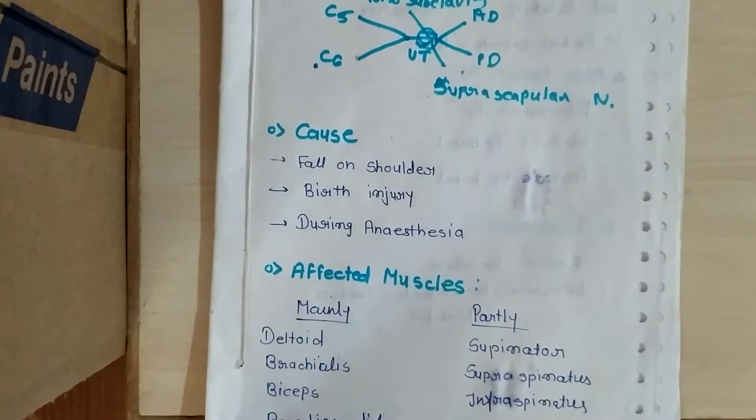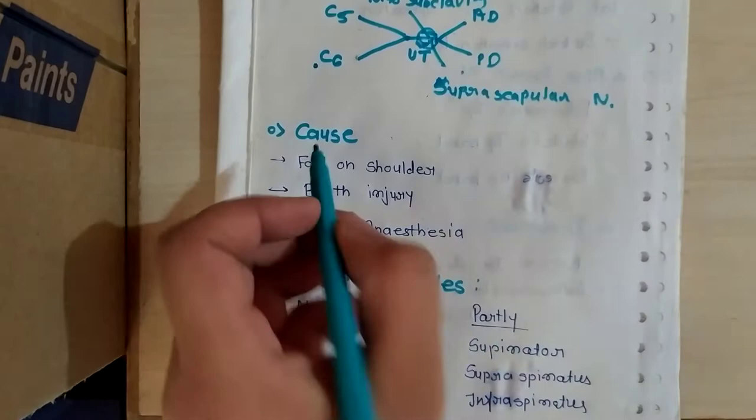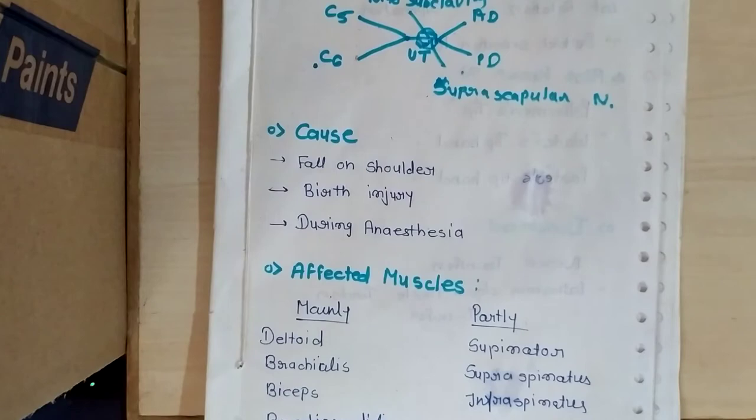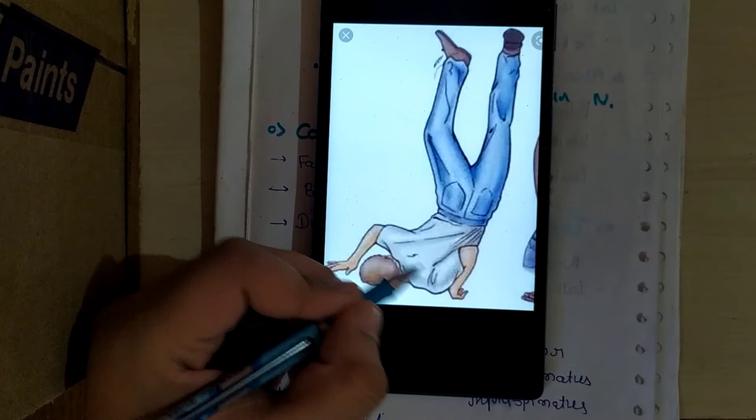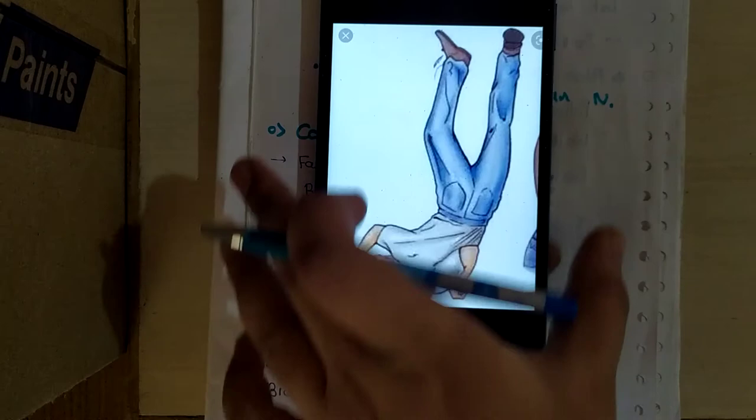First is fall on the shoulder. When we fall on the shoulder, then this Erb's palsy occurs. Second is birth injury. When someone has a birth injury, then this can happen. And during anesthesia, it can cause palsy. Fall on the shoulder is the main cause. You can see in the diagram that the person is falling on his shoulder. Here is the brachial plexus. So if we fall on the shoulder, the brachial plexus may be damaged and the Erb's point can also be damaged.